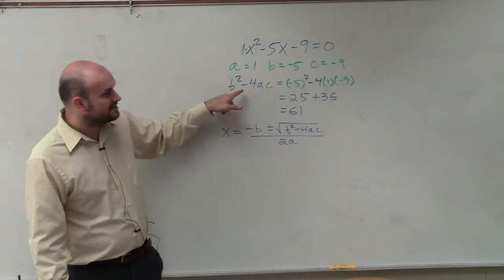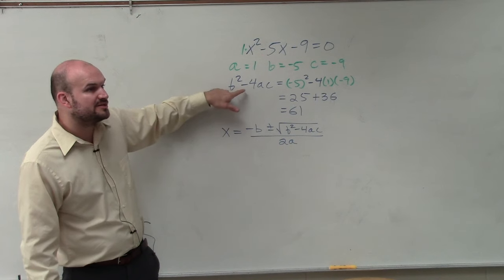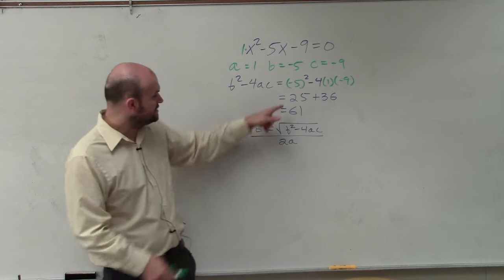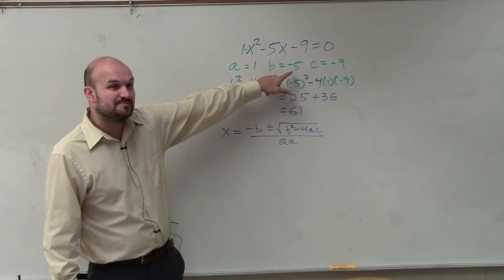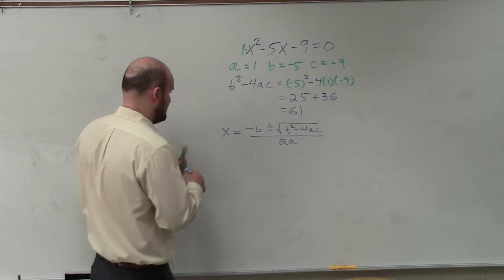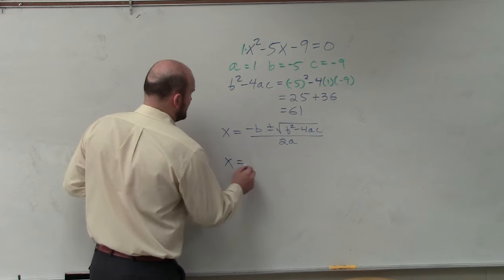The nice thing about this, at least the quadratic formula, is if you guys remember b squared minus 4 times a times c, you understand that that's what goes under the radical. All you need to do then is do the opposite of b. So since b is negative 5, opposite of b is going to be positive 5.